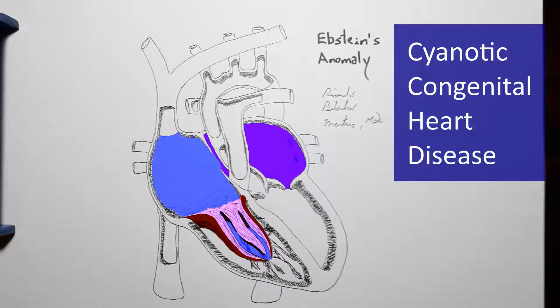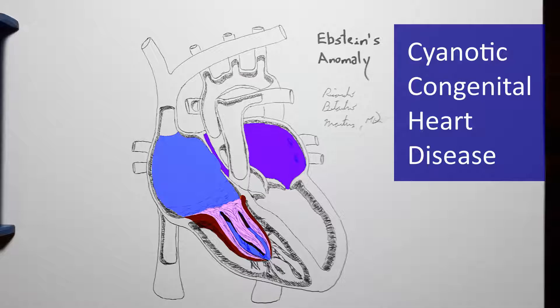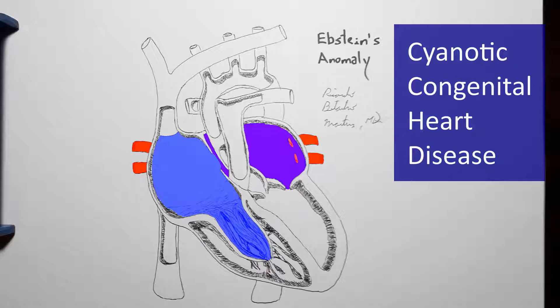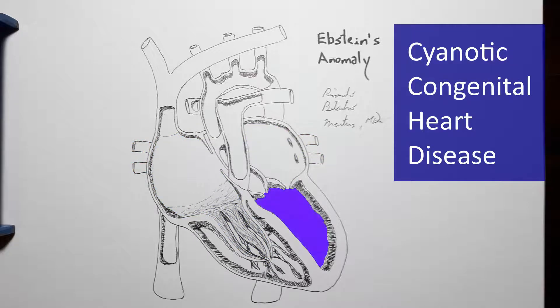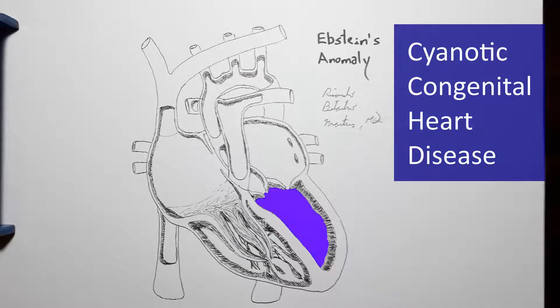Meaning that, through the atrial septal defect, blood will flow from the right — deoxygenated systemic blood — to the left oxygenated blood. Mixing of oxygenated and deoxygenated blood will occur in the left atrium, and the blood being pumped to the systemic circulation will be a mixture of arterial and venous blood.